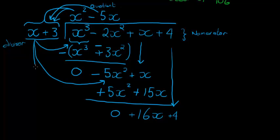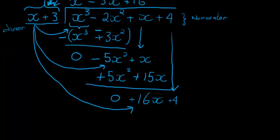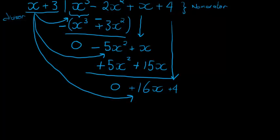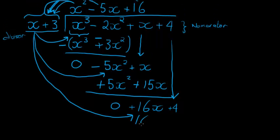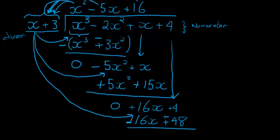Last time, divide my x in here. 16x divided by x gives me positive 16. And this positive 16 gets multiplied back to both terms there. 16 times x gives me 16x. And 16 times positive 3 gives me positive 48. Now, subtracting changes all of the signs. So, that becomes negative, and that becomes negative. So, I get 0, and on this side, I get negative 44.